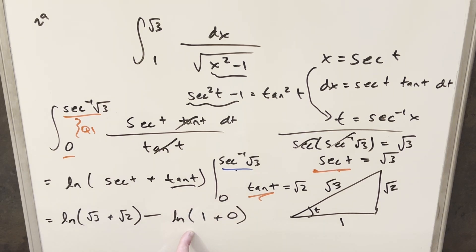but then this is just natural log of 1, that value is just 0, so this is going away. So for my final solution on this, we just get natural log of square root of 3 plus square root of 2, and that's it.